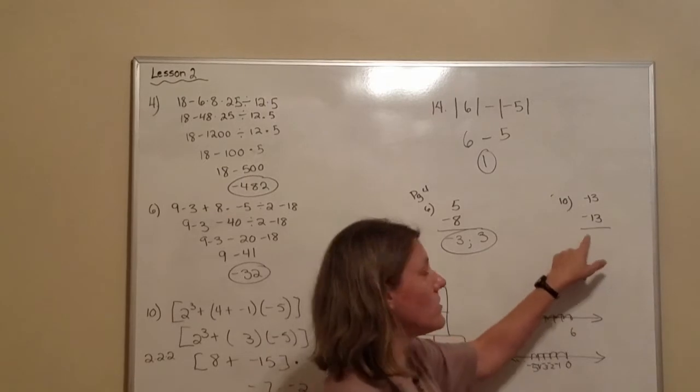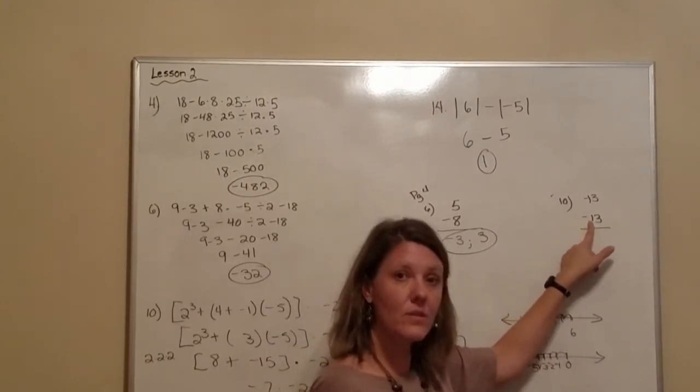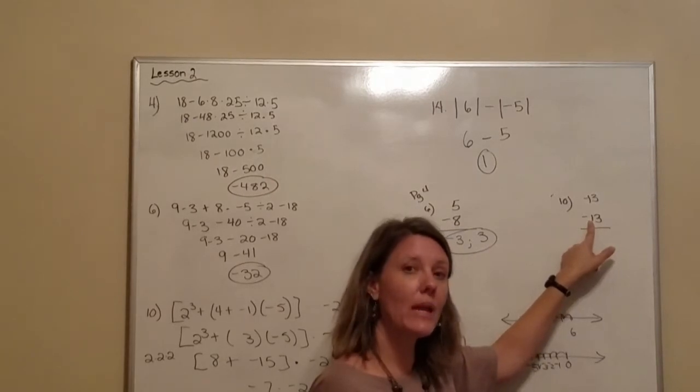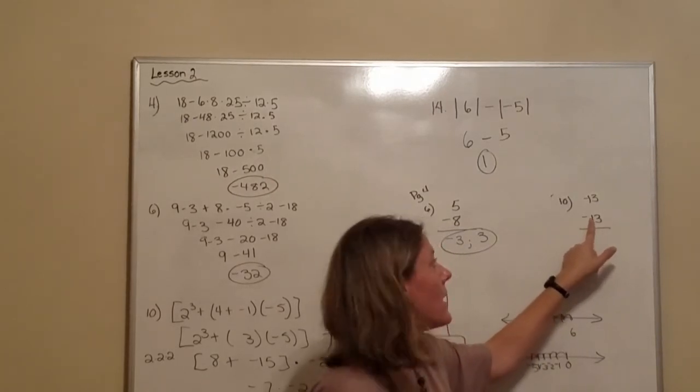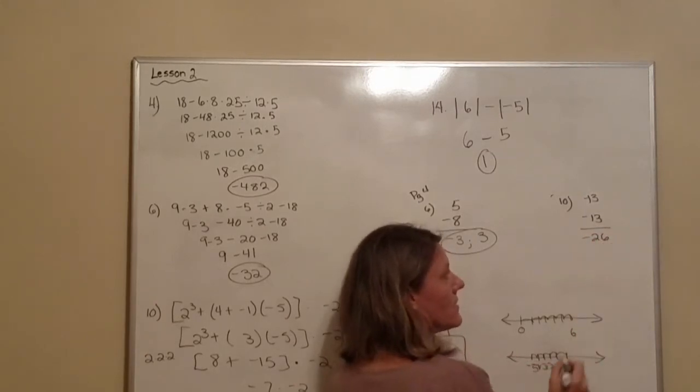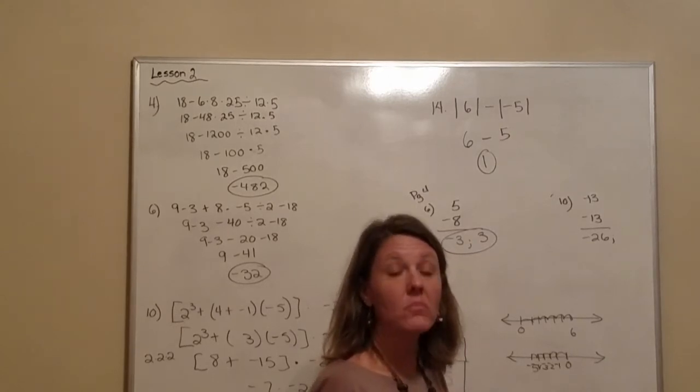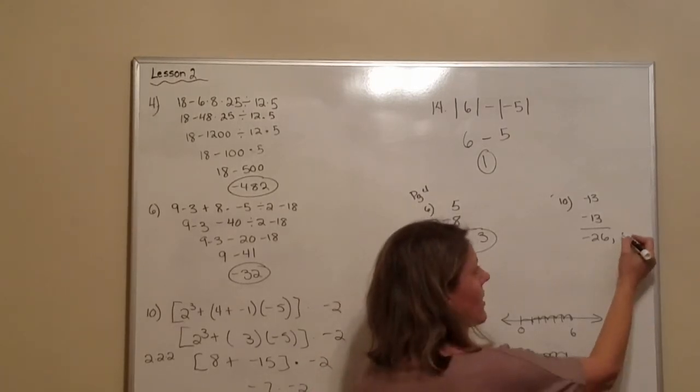Now, let's skip down to number 10. We have a negative and a negative. Since they're the same sign, we're going to go ahead and add them and keep the same sign. So, that would be negative 26. Well, what's the absolute value of negative 26? 26. Good job.